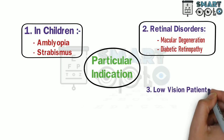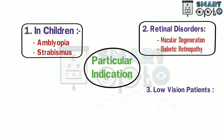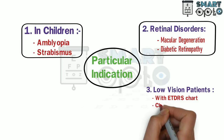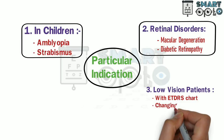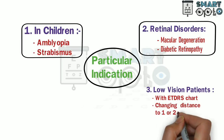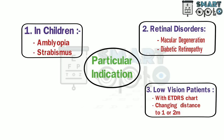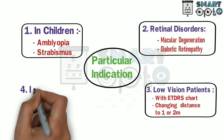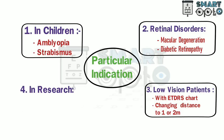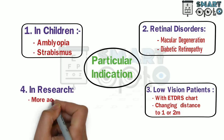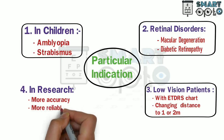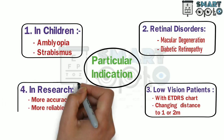For low vision patients, visual acuity is tested using the ETDRS chart by varying the distance from the standard four meters to one to two meters. For research purposes, the LogMAR visual acuity charts are considered to be more accurate and reliable while recording visual acuity.